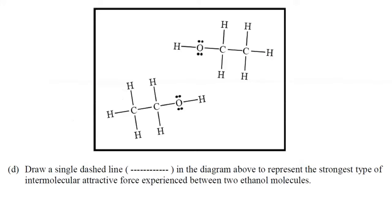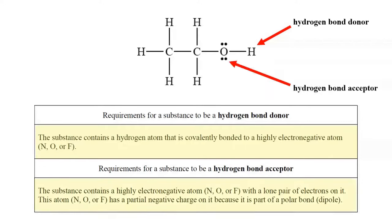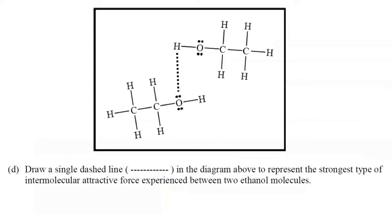In Part D, draw a single dashed line to represent the strongest type of intermolecular attractive force between two ethanol molecules — that is, hydrogen bonding. Ethanol can behave as both a hydrogen bond donor and acceptor because it contains a hydrogen directly bonded to oxygen, and an oxygen with a lone pair that is part of a polar bond. The dashed line should connect the lone pair on the oxygen of one molecule to the hydrogen bonded to oxygen in a second molecule. Two possible correct answers are shown.